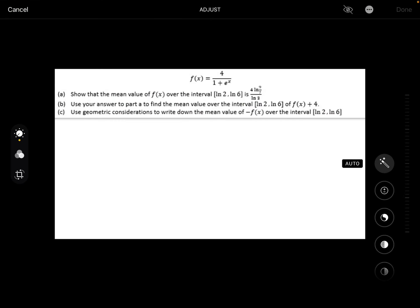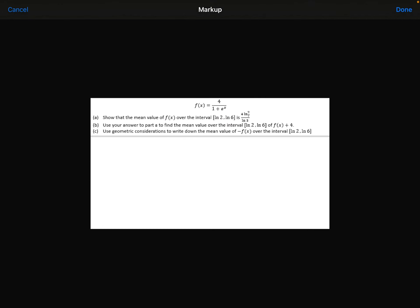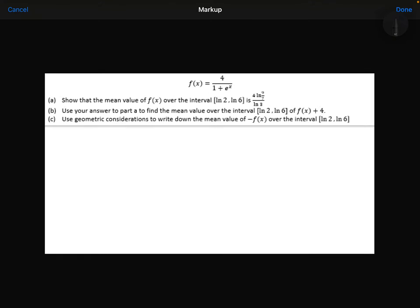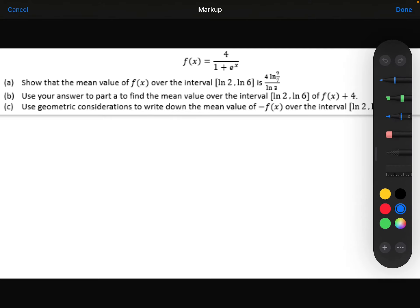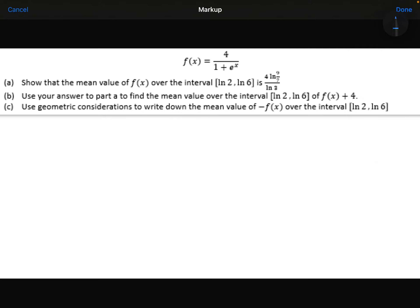Second example. Slightly more complicated now. Part a, show that the mean value of f(x) over the integral from ln 2 to ln 6 is 4 ln 9 over 7, all divided by ln 3.